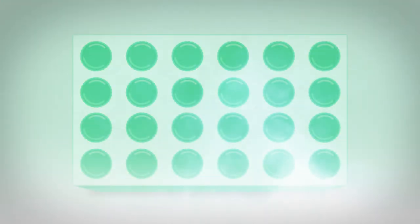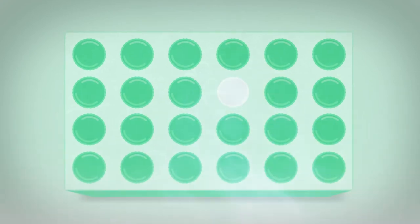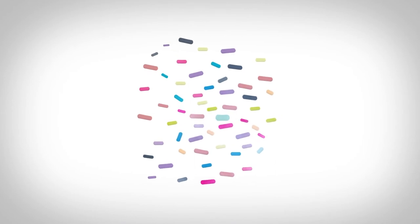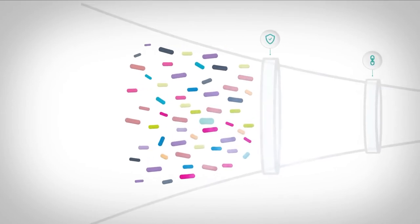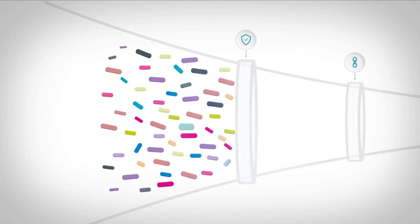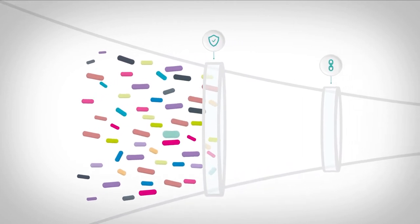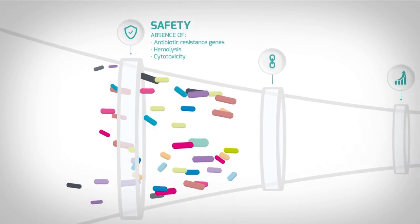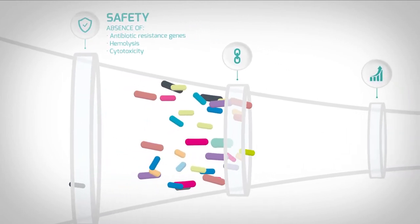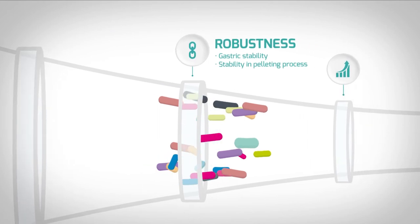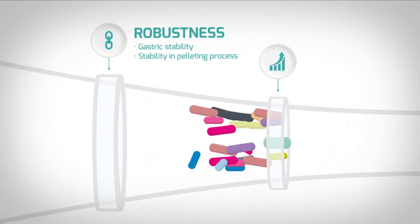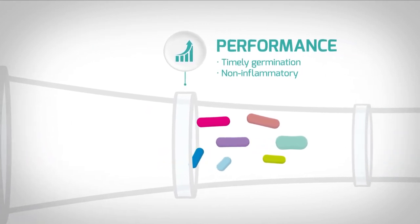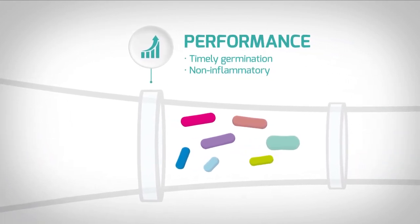We knew where to look when we set out to find candidates for a new probiotic solution to improve animal performance and gut health. To find the optimal candidate, we screened more than 900 AAFCO-listed strains in vitro for safety in humans and animals, robustness under challenging conditions, and activity in the small intestine for optimal gut health, feed conversion ratio, and body weight gain.